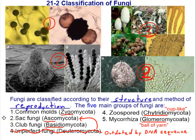It's time to take a look at the classification of the kingdom fungi. There are five main groups, and they're classified primarily by their structures — their reproductive structures, mostly by their sexual reproductive structures.